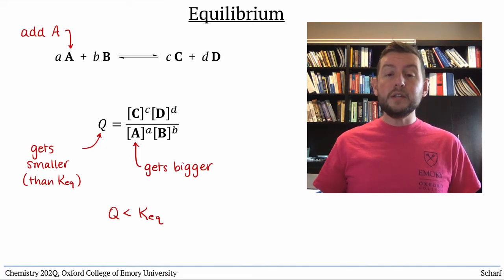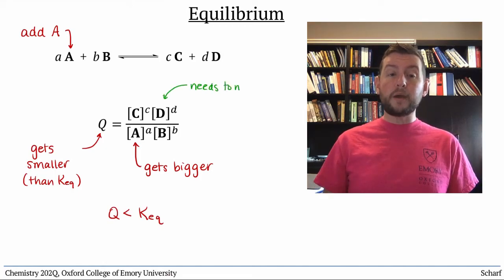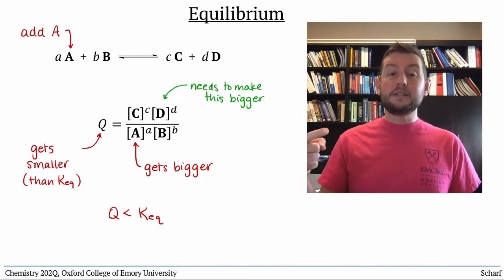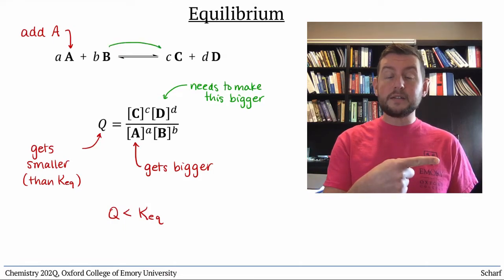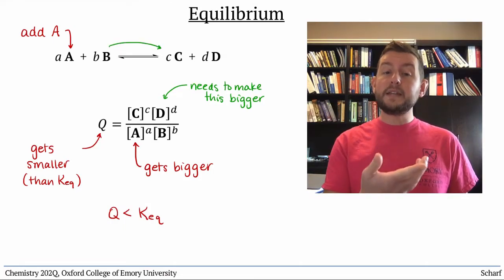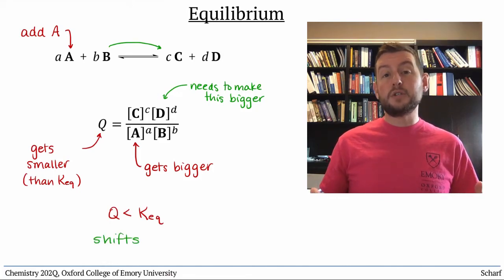And in order to do this, it needs to make the numerator bigger. It needs to make additional products, C and D. We say that the reaction shifts to the right.